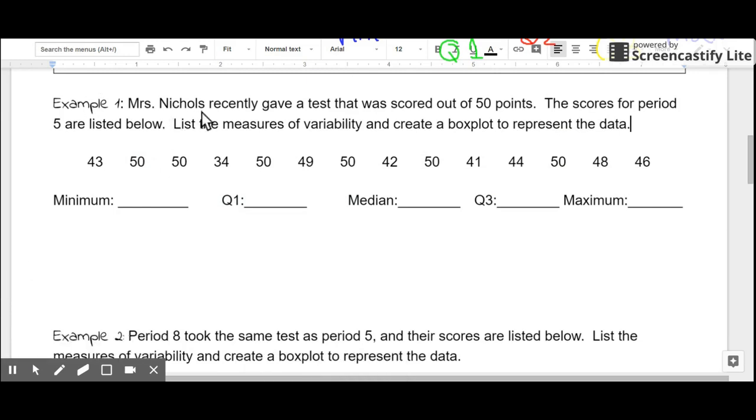Take a look at example one. Mrs. Nichols recently gave a test that was scored out of 50 points. The scores for period five are listed below. List the measures of variability and create a box plot to represent the data. So the measures of variability are these numbers that we've been looking at, the words that we just defined above. To calculate these measures, we need to first arrange the data in order from least to greatest, and then just determine which number falls into which position. We're not really doing a lot of actual calculating. So take a moment to pause the video and arrange these numbers in order from least to greatest.